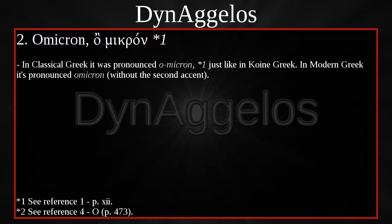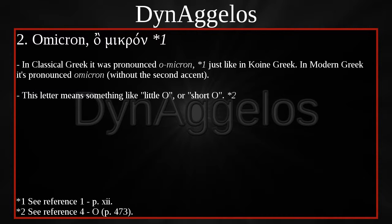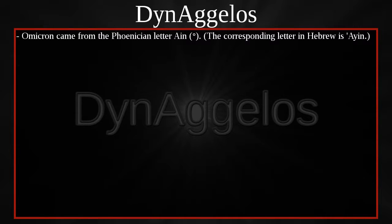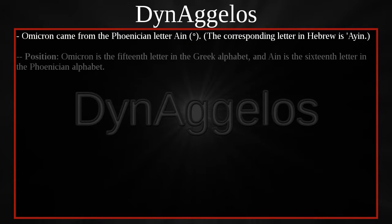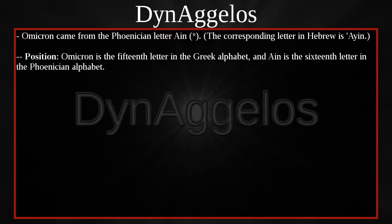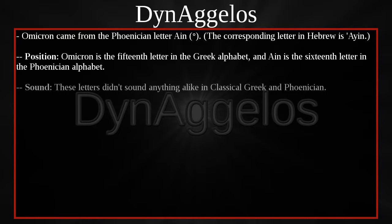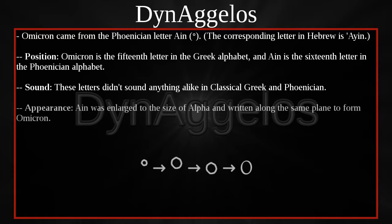OMIKRON — in classical Greek it was pronounced OMIKRON, just like in Koine Greek. In modern Greek it's pronounced OMIKRON, without the second accent. This letter means something like 'little o' or 'short o.' OMIKRON came from the Phoenician letter AYIN. The corresponding letter in Hebrew is also AYIN. OMIKRON is the 15th letter in the Greek alphabet, and AYIN is the 16th letter in the Phoenician alphabet. These letters didn't sound anything alike in classical Greek and Phoenician. AYIN was enlarged to the size of alpha and written along the same plane to form OMIKRON.